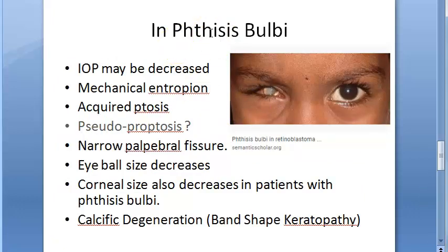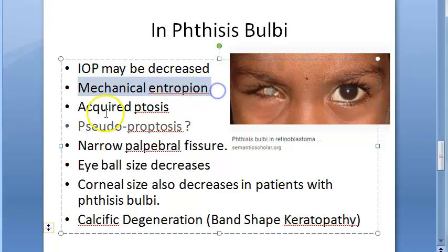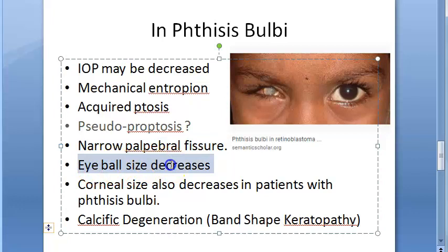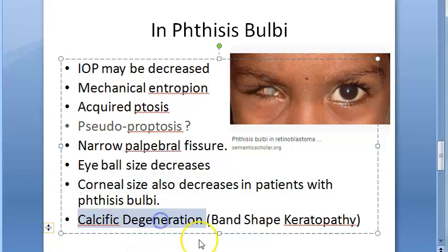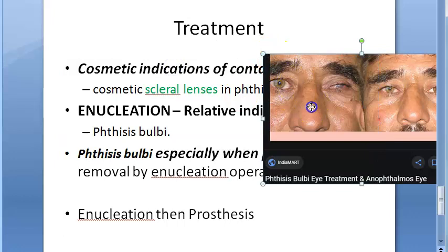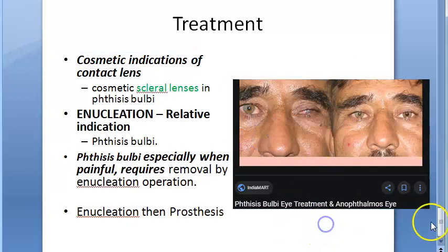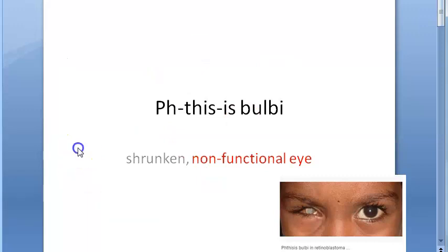In phthisis bulbi: IOP may be decreased (it is only raised in the initial stage), mechanical entropion, acquired ptosis, narrow palpebral fissure, eyeball size decreases, corneal size also decreases, and calcific degeneration. For treatment: cosmetic scleral lenses can be given, enucleation can be done if it is painful, and a prosthesis can be placed for cosmetic purposes. That is all for this video on phthisis bulbi.